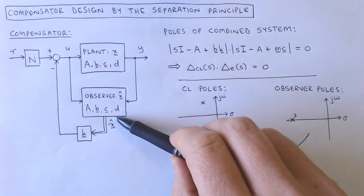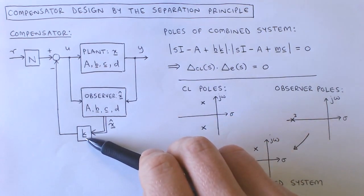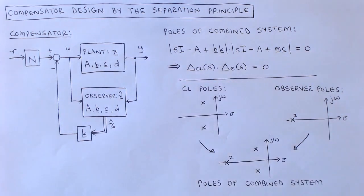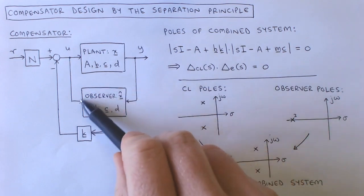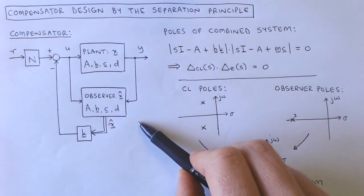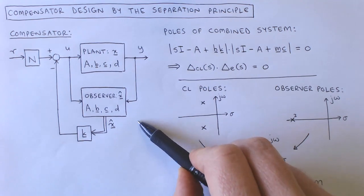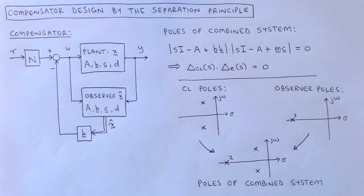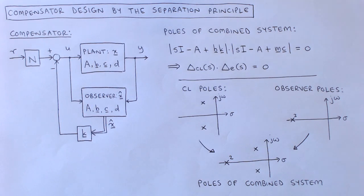When designing the state feedback gain k, we assumed that the states were available. Since this is an unrealistic assumption, we designed the observer to reconstruct the states as accurately as possible, and we then used these estimated states for feedback. However, we introduced additional dynamics when we added the observer, and the dynamics of the combined system will now be different from that of the system without the observer. Today we look at how the system dynamics change when we add an observer.